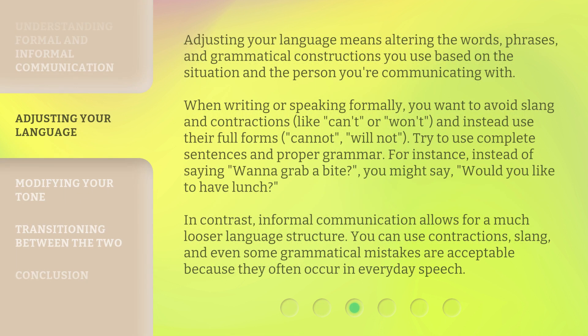Adjusting your language means altering the words, phrases, and grammatical constructions you use based on the situation and the person you're communicating with. When writing or speaking formally, you want to avoid slang and contractions like 'can't' or 'won't,' and instead use their full forms: 'cannot,' 'will not.' Try to use complete sentences and proper grammar. For instance, instead of saying 'want to grab a bite?' you might say 'would you like to have lunch?' In contrast, informal communication allows for a much looser language structure — you can use contractions, slang, and even some grammatical mistakes are acceptable because they often occur in everyday speech.